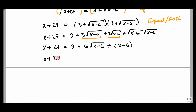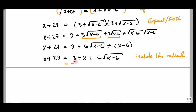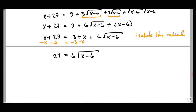Now I want to isolate the remaining radical. Subtracting 3 and subtracting x from both sides: x − x = 0, 27 − 3 = 24, so 24 = 6√(x−6). I can divide through by 6: 24 ÷ 6 = 4. So 4 = √(x−6). Now I square both sides again to get rid of this radical: 4² = 16 = x − 6. Adding 6: 16 + 6 = 22 = x. This is a potential solution — we must check for extraneous roots.